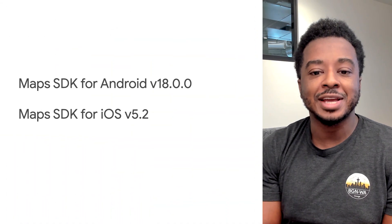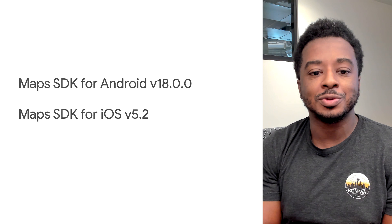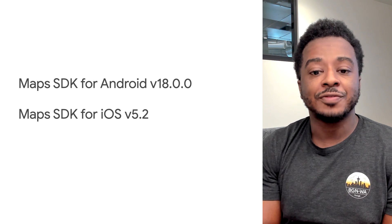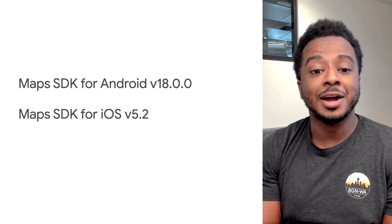Our team is happy to report that cloud-based map styling is now generally available for Android and iOS, starting with version 18 of the Maps SDK for Android, distributed through the Google Play services, and version 5.2 of the Maps SDK for iOS.